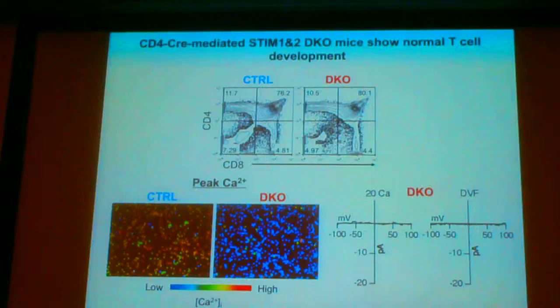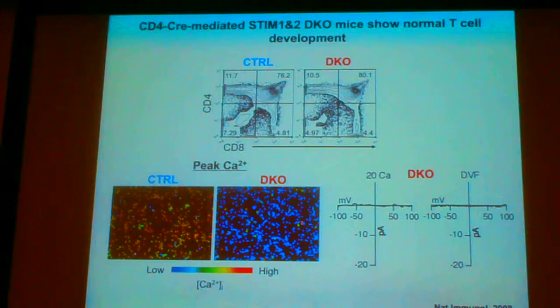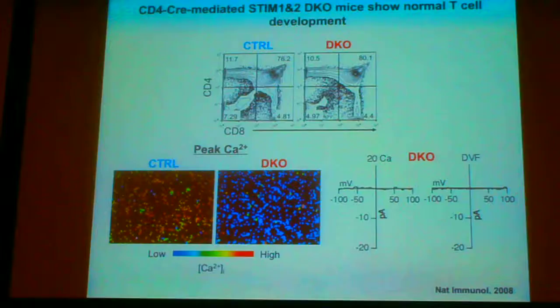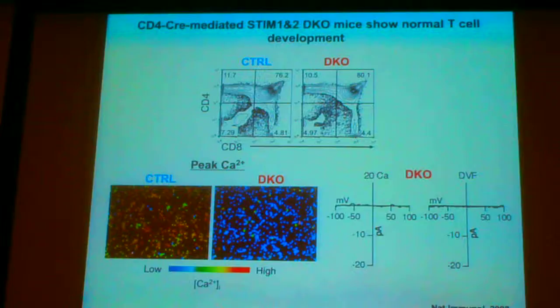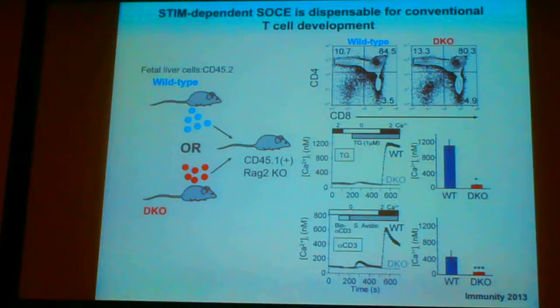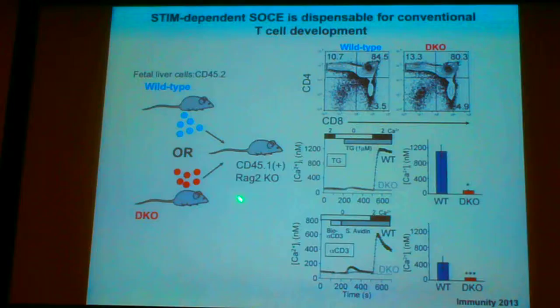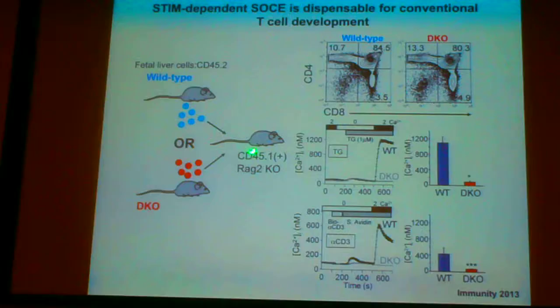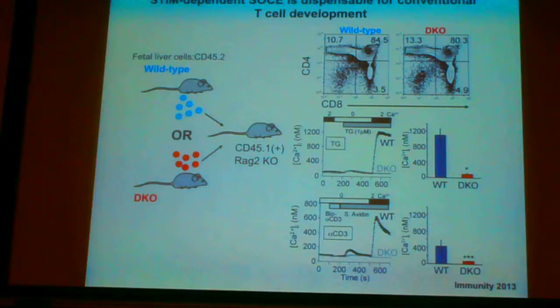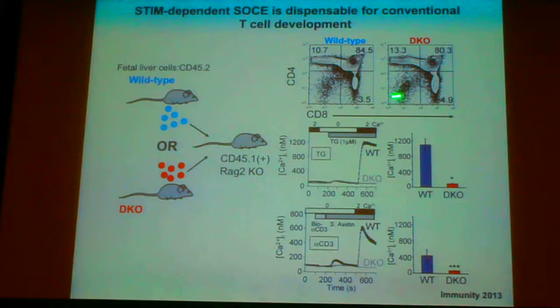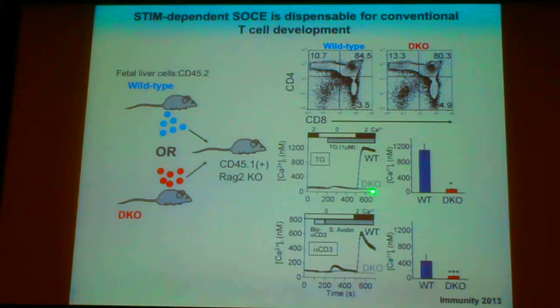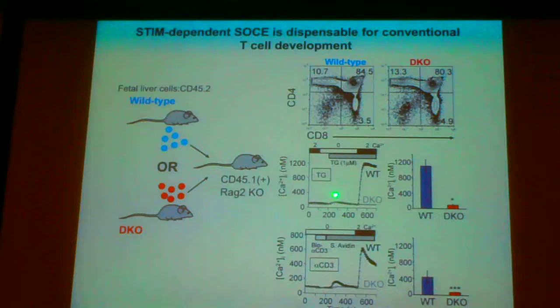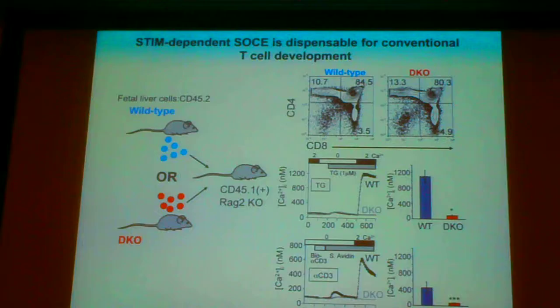As I mentioned in the introduction, calcineurin-deficient mice using CD4-Cre mice show a partial defect of positive selection, suggesting that the CD4-Cre gene deletion is too late to examine thymic selection. Therefore, we established chimeric mice reconstituted with fetal liver cells from wild-type and double knockout mice, transferred into congenic mice on a RAG2 knockout background. Surprisingly, T cell development again looked normal by CD4 and CD8 markers, despite the complete defect of store-operated calcium entry upon stimulation with TCR transgene or anti-CD3 of the double positive thymocytes.